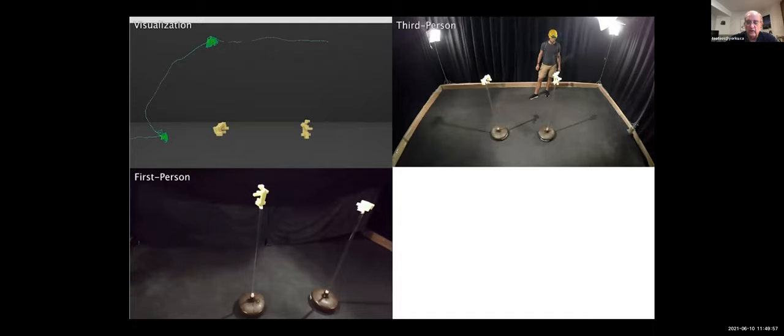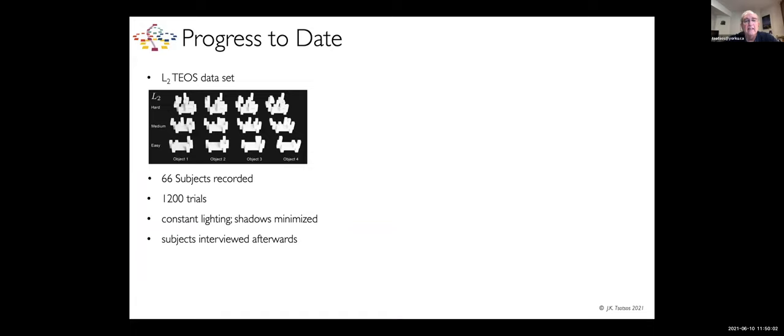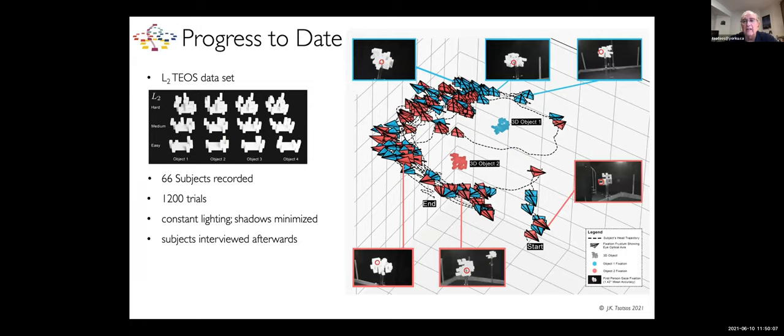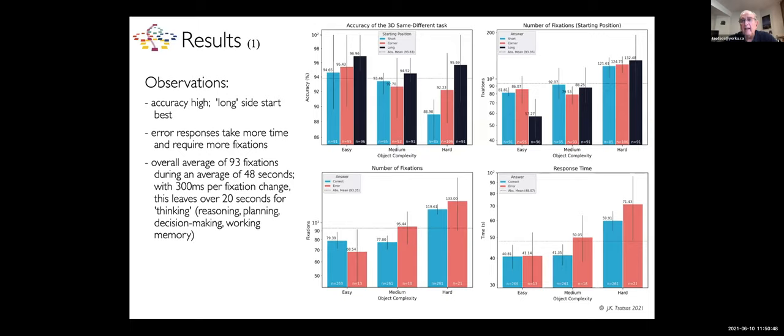Our progress to date is that we've recorded 66 subjects with 1,200 trials. A trial looks like this. This is kind of getting scary if you think about it from the perspective of how am I going to analyze all of this. There are two objects in red and cyan. Each of the viewing frusta for each object is shown in its color. You see the dotted line is where the subject's head was moving. The little red circle shows you where gaze is centered. So we now have 1,200 of these.